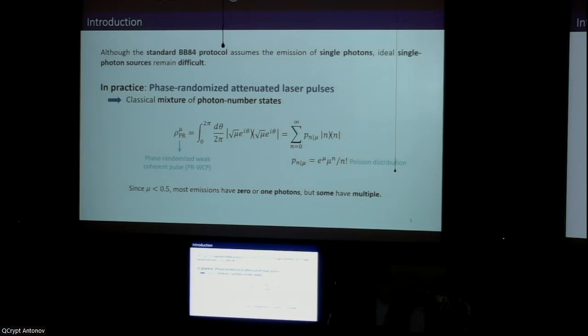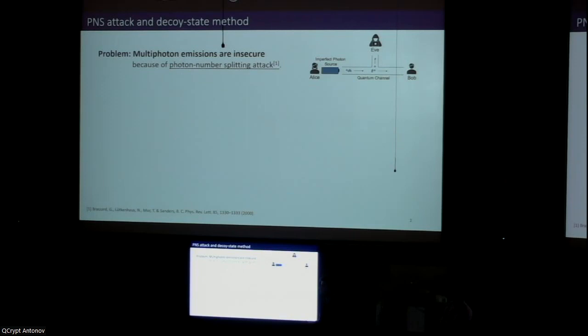Thank you very much. I'll start with a brief introduction. As you know, many protocols including the standard BB84 protocol assume that users can emit single photons. However, ideal single photon sources remain very challenging to build. Therefore, most implementations use phase randomized attenuated laser pulses. Ideally, these pulses can be regarded as a statistical mixture of photon number states, which means some pulses will have multiple photons. This creates a problem because the bits that originate from them are completely insecure due to the photon number splitting attack.